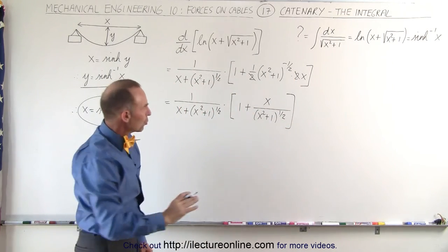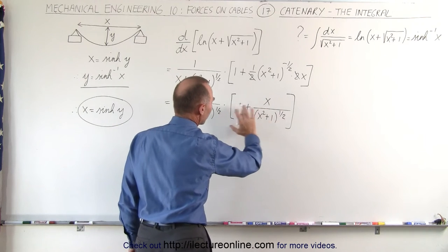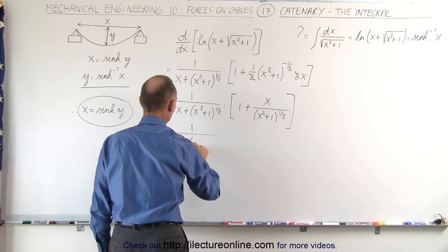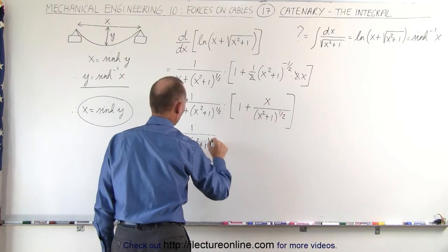So now we want to add these together, write over a common denominator. This is equal to 1 divided by x plus x squared plus 1 to the 1/2 power, times...